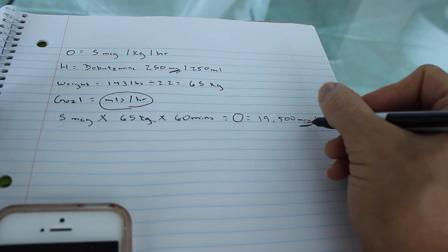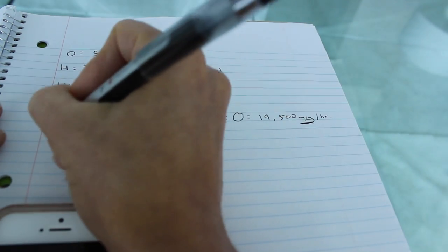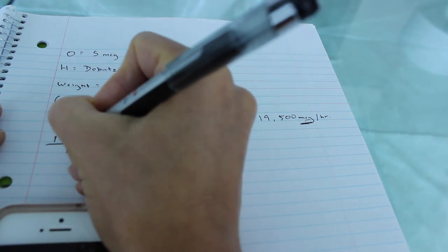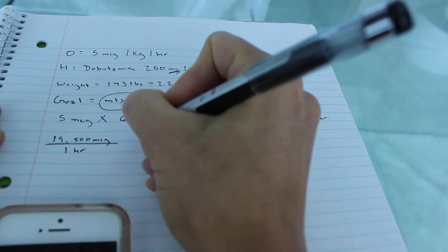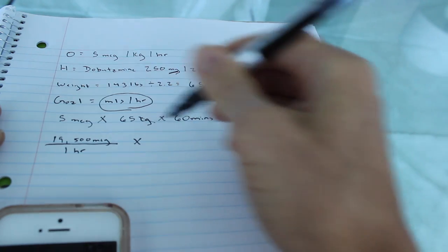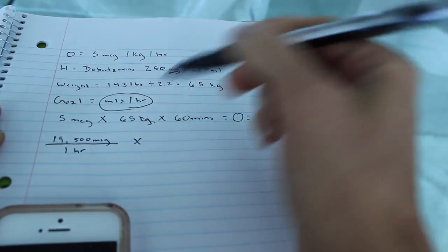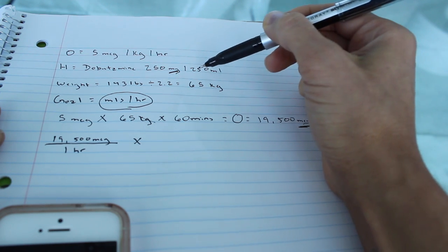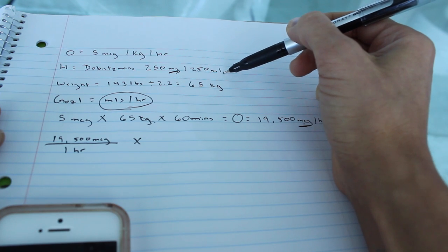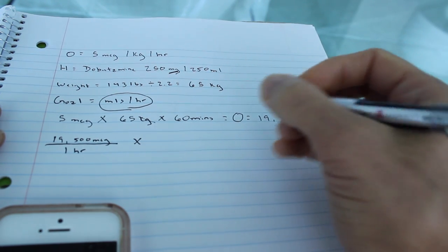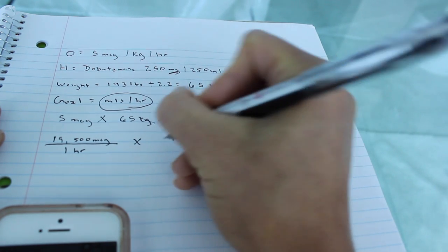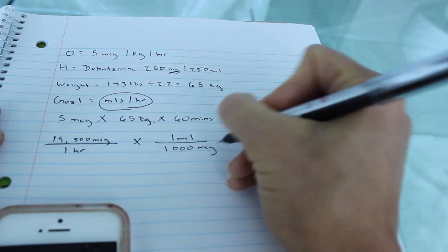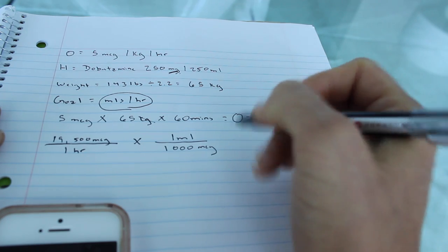So this is in micrograms. I want to get rid of the micrograms. So I'm going to set up the conversion like this: 19,500 micrograms over one hour. And I got that from here, micrograms per hour. Now, in dimensional analysis, you want to cross off the items or the unwanted quantities. So the unwanted quantity here is micrograms. So I know, because this constitution up here is 250 milligrams in 250 mLs, it's basically a one-to-one solution. So I know that every mL is 1,000 micrograms, because remember that every milligram is 1,000 micrograms per the metric table.